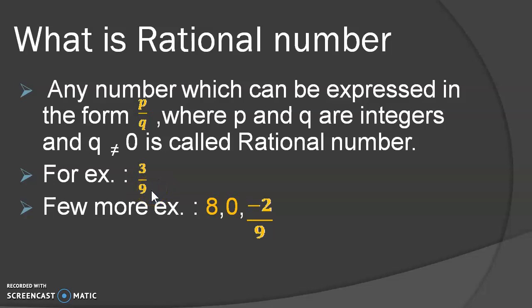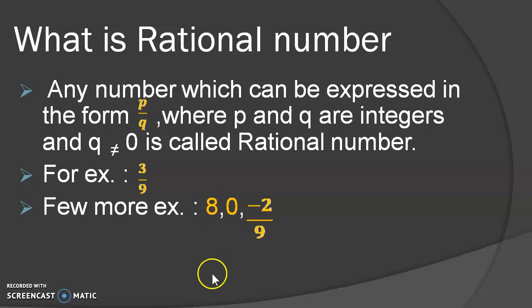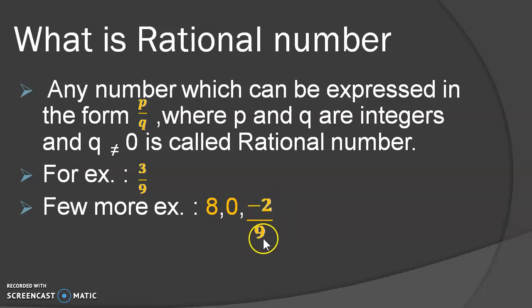Let us take a few more examples. Do you think 8 is a rational number? Yes, it is, because 8 can be written as 8 upon 1. And we can also have negative rational numbers — that is, minus 2 upon 9 can also be a rational number. And definitely 0 is also a rational number.